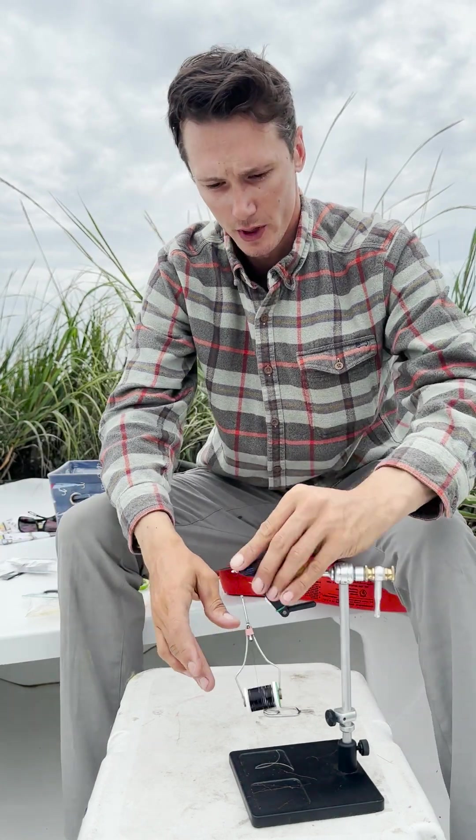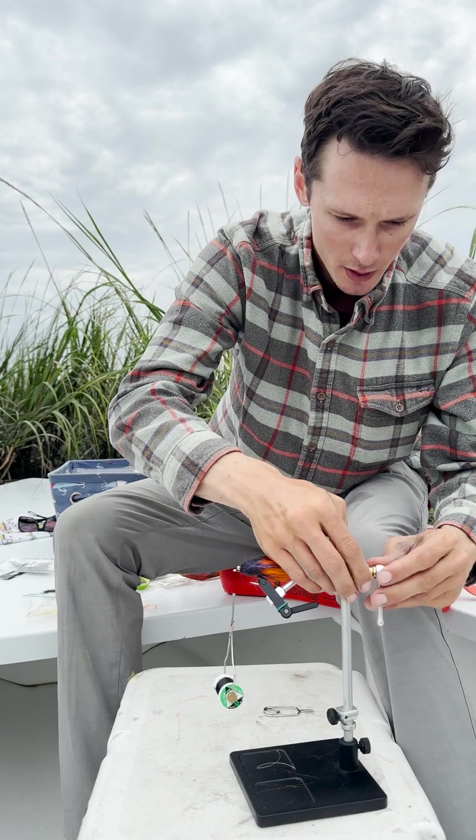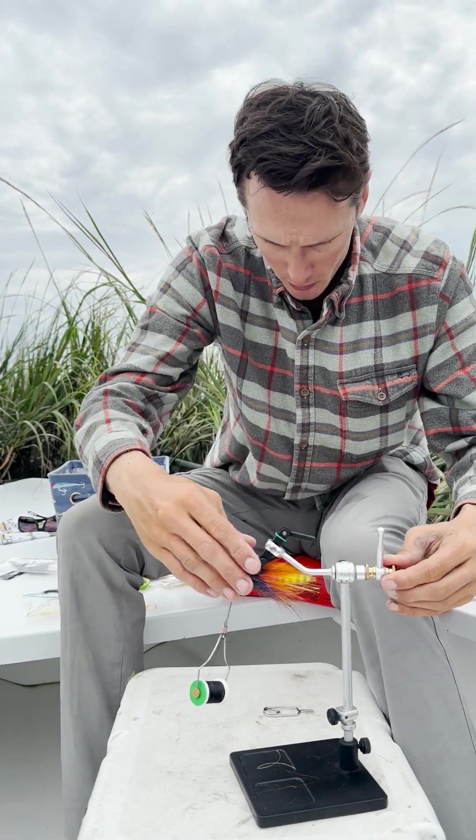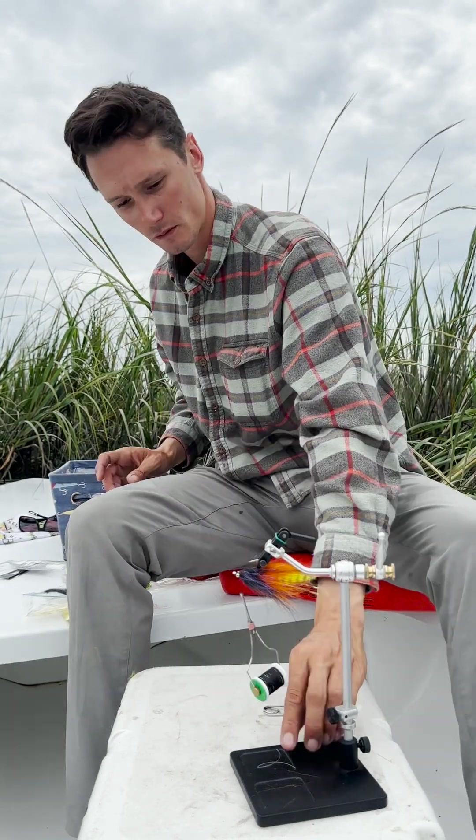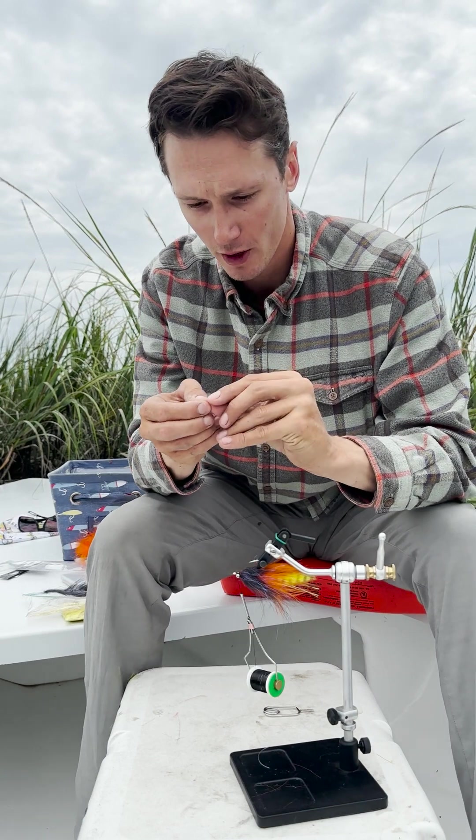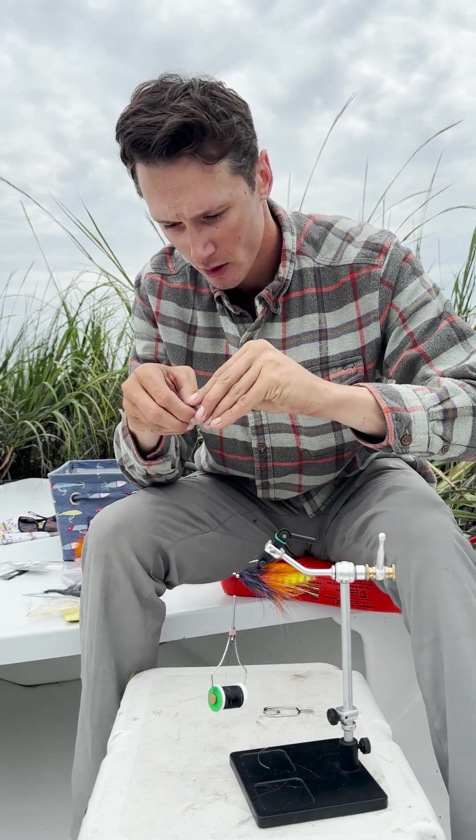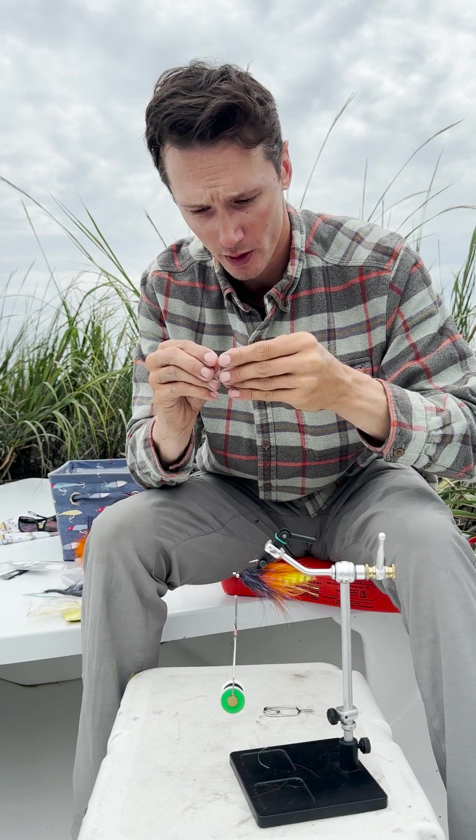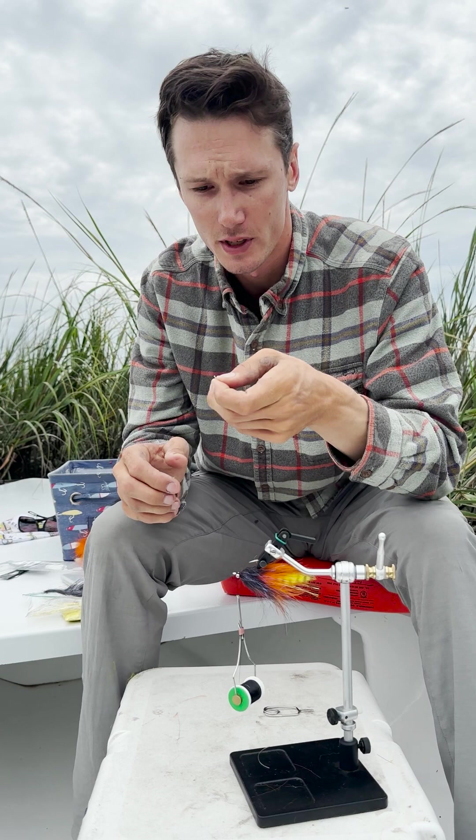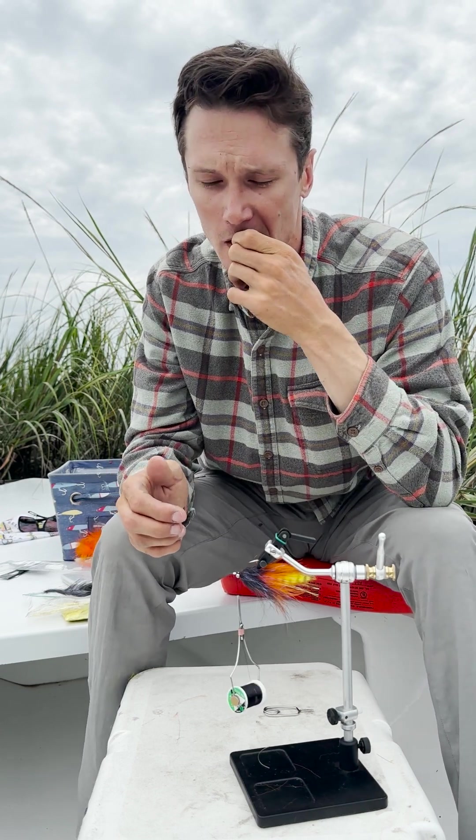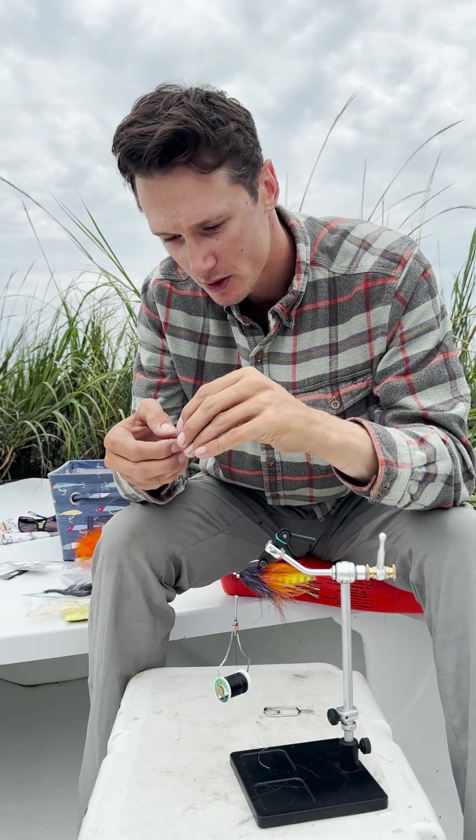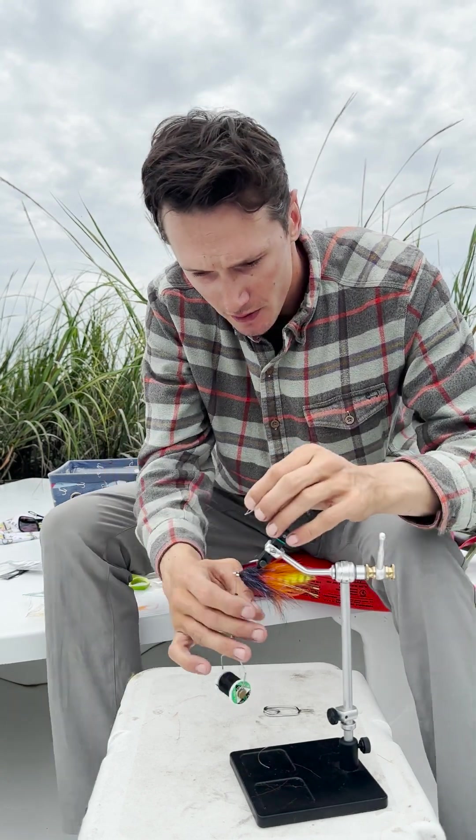Last thing's a weed guard. I fish all my flies with a weed guard. See if we can do that real quick. This is 40 pound Andy mono. This is the way I do it, everyone kind of has their own way of doing a weed guard, but I just kind of crease it and then bite it a little bit just to get a nice V in it.